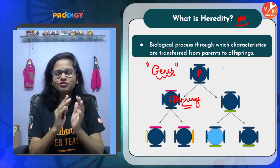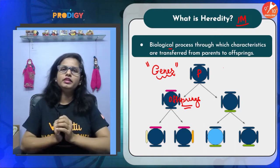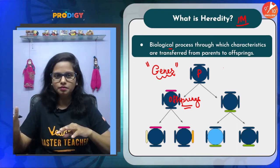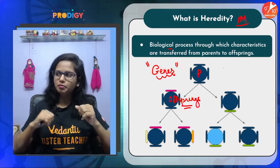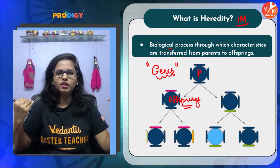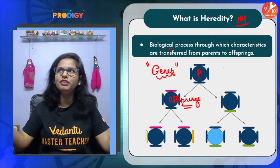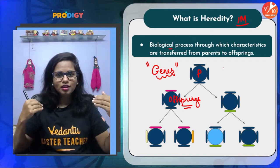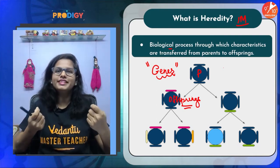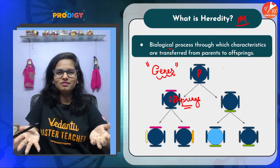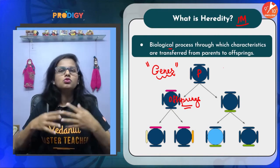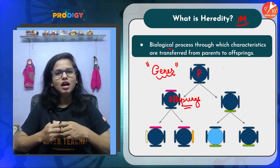I mentioned I have a dimpled chin like my mom, but my complexion is totally different. My dad, brother, and grandparents on both the maternal and paternal sides are fair — I'm the only one born with a darker complexion in our entire family tree. So I am a classic example of variation. Differences in characters seen from the rest of the population is what we call variation.